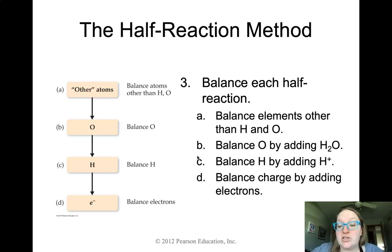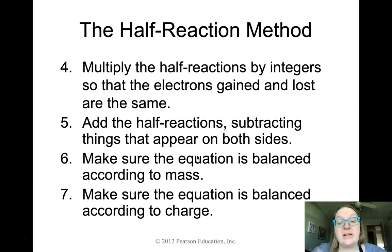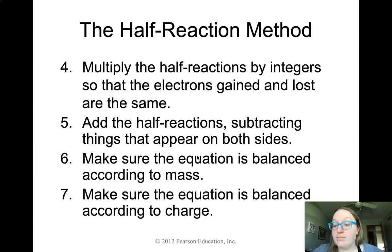Do this for each half-reaction — once for the reduction and once for the oxidation. Then comes step four: multiply each half-reaction by integers so that both reactions have the same number of electrons. For example, if you had to add three electrons in the oxidation reaction and six electrons in the reduction reaction, you would multiply the first reaction by two so that both now have six electrons.